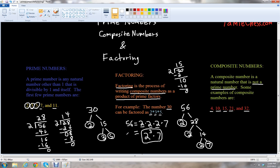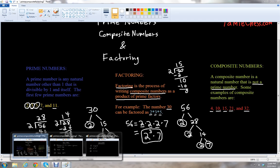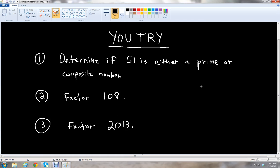Now that you understand prime numbers, composite numbers, and how to factor a composite number as a product of prime factors, let's go over doing 3 problems on your own. First problem asks, determine if 51, the number 51, is either a prime or composite number. So 51, if it's divisible by 1 and itself, it's a prime number, but if it can be factored as a product of 2 or more prime numbers, then it's composite.